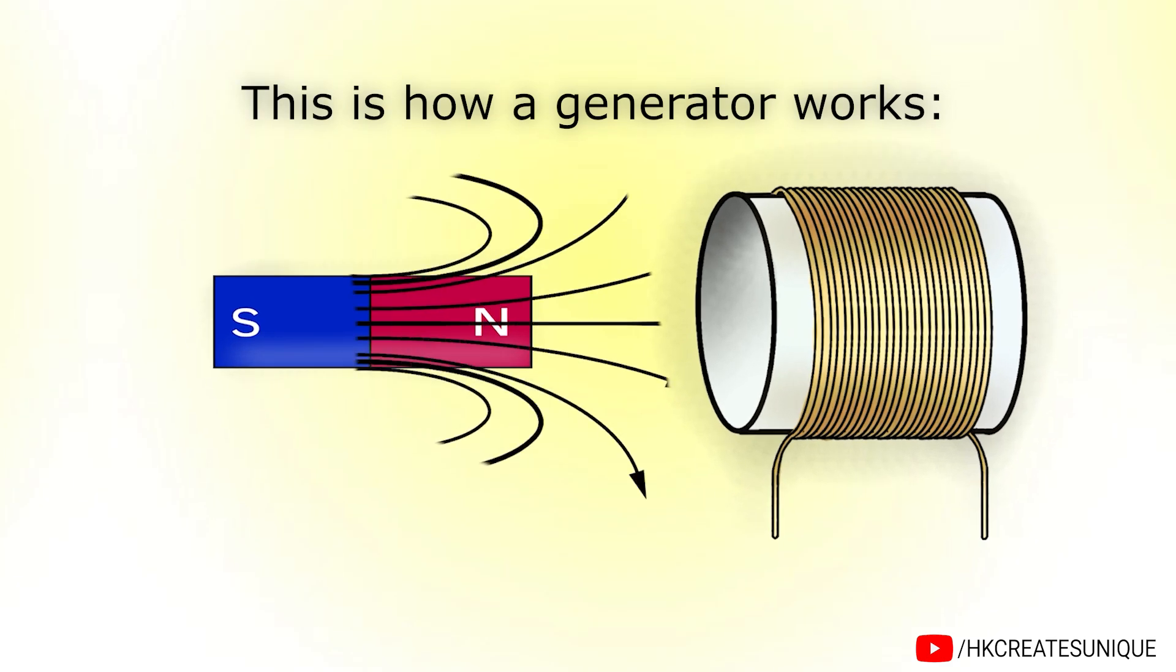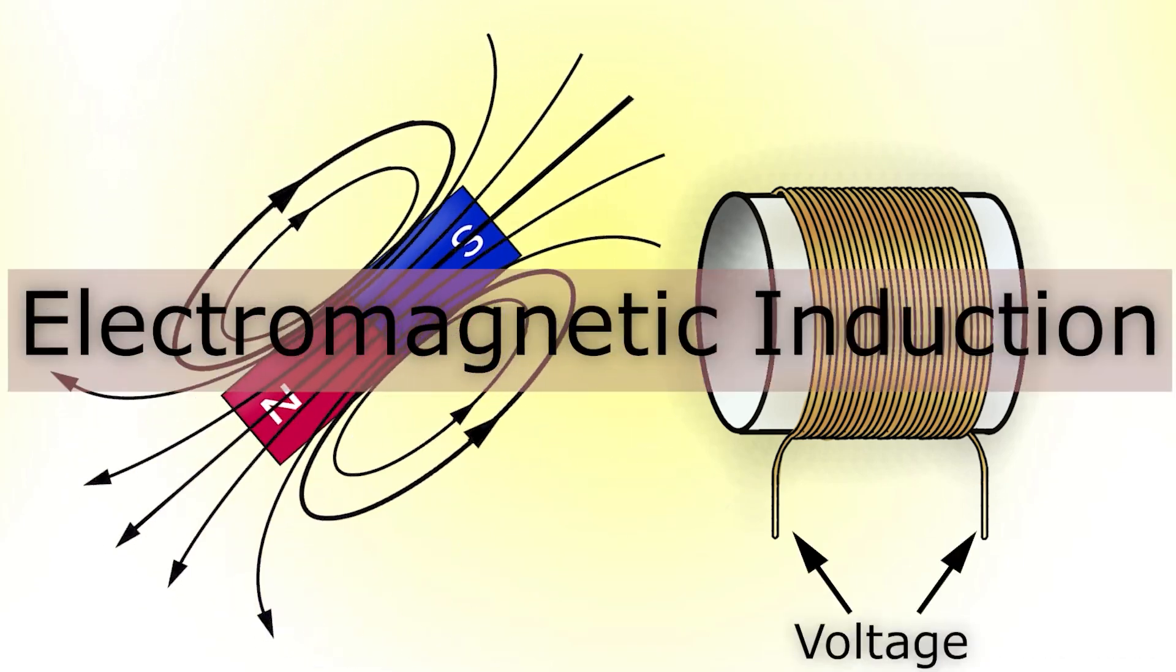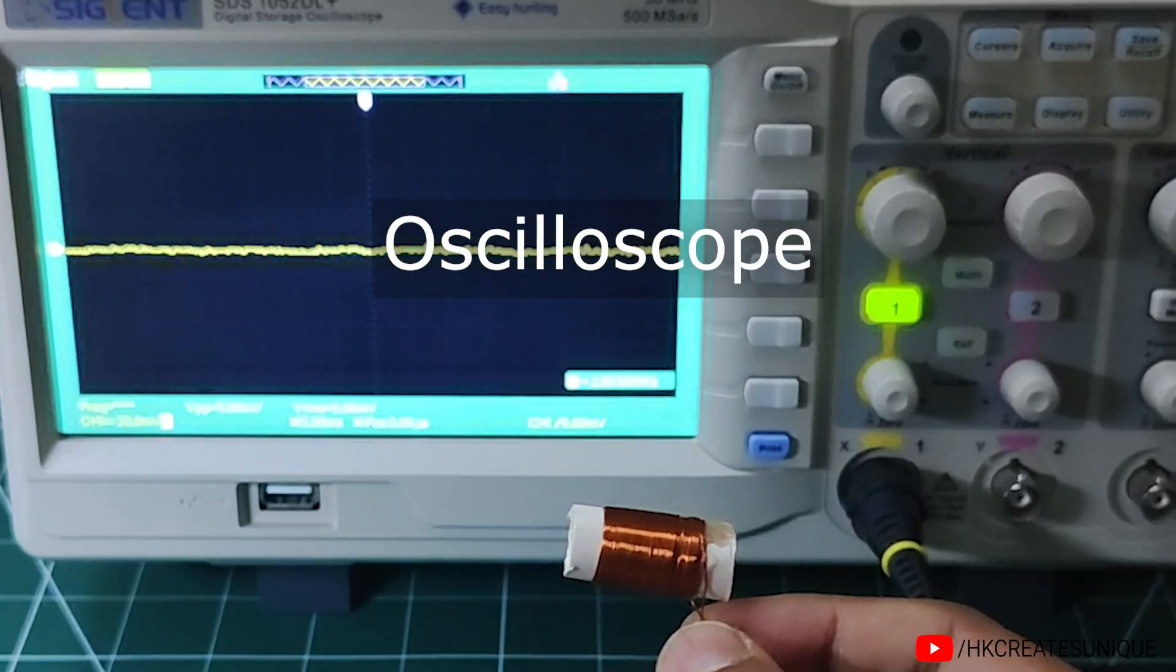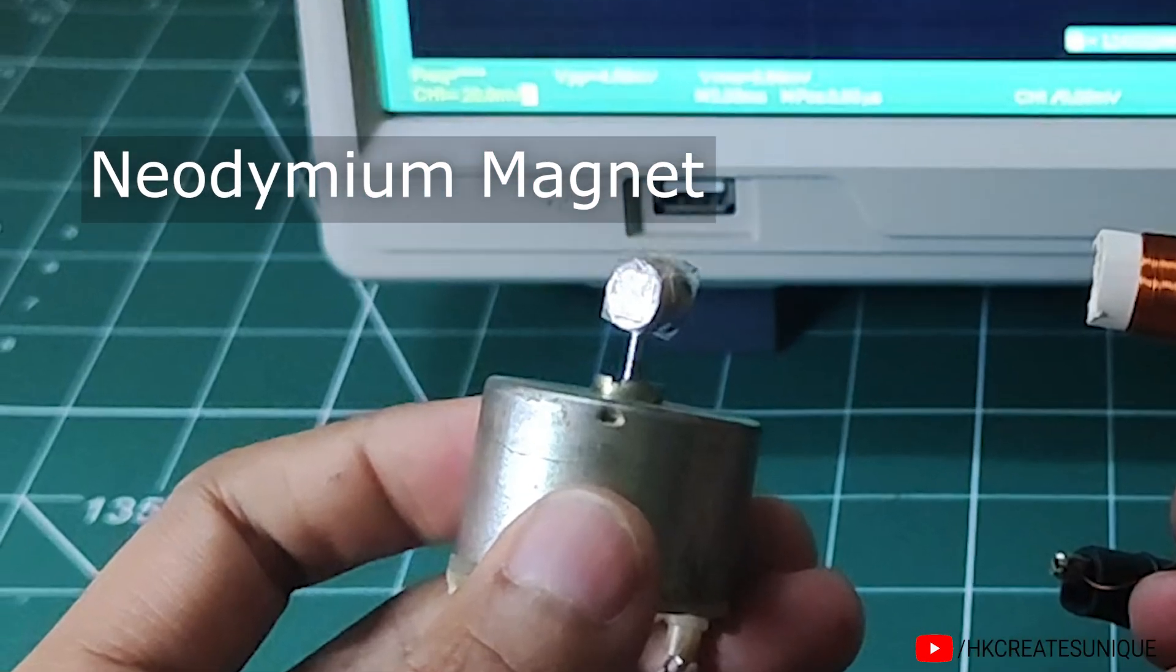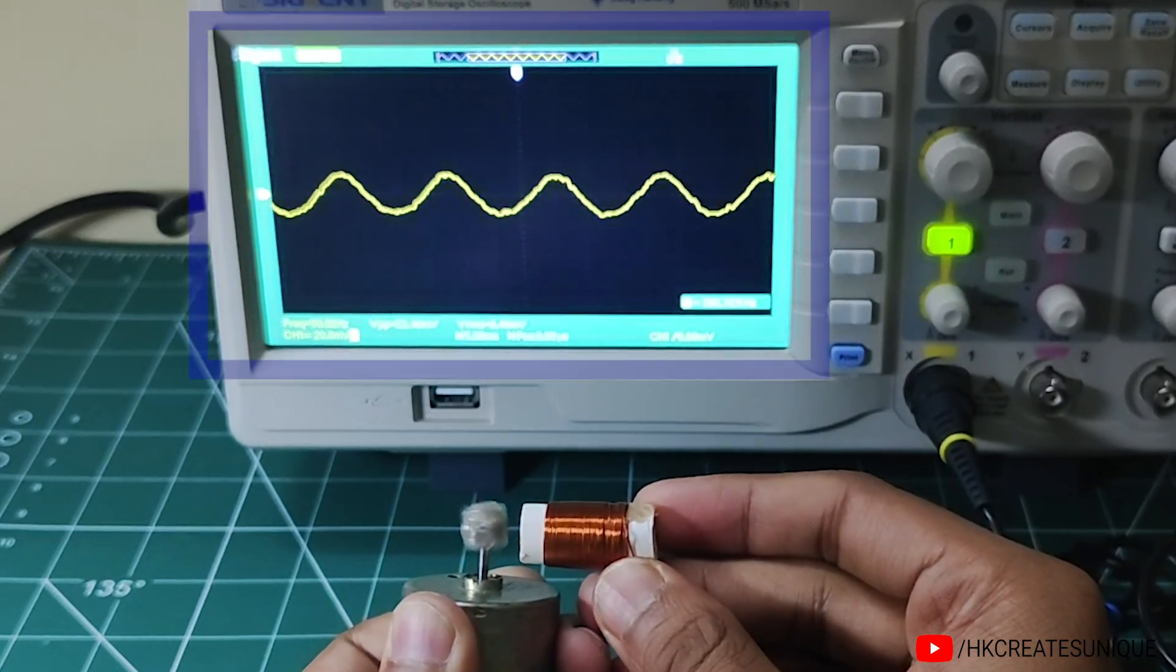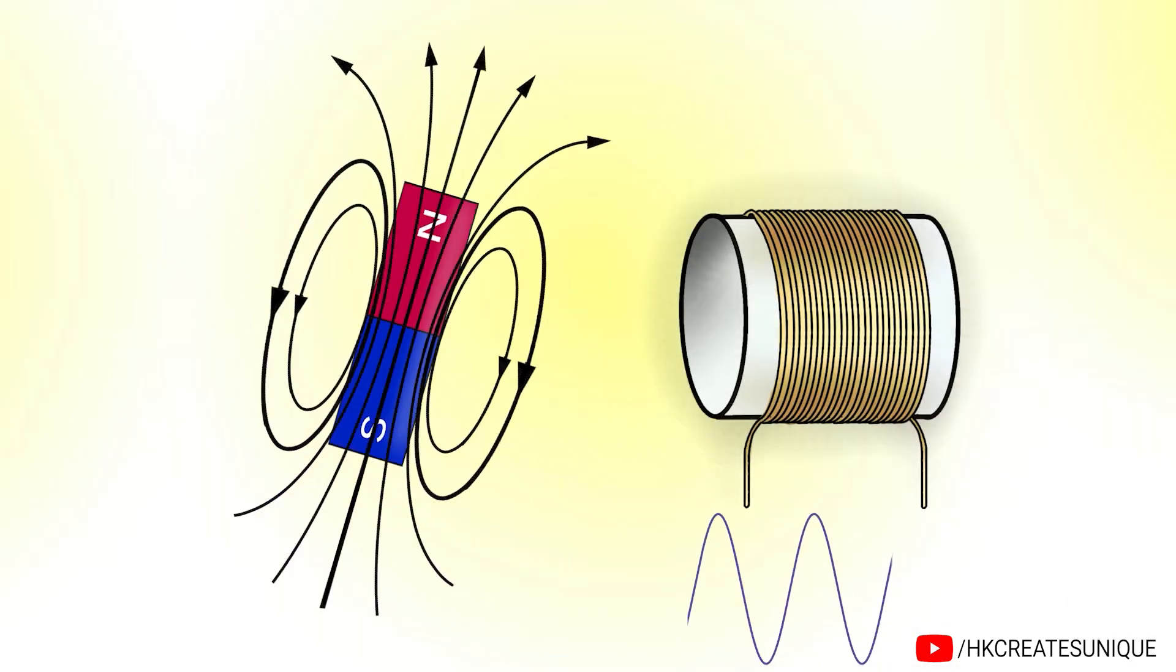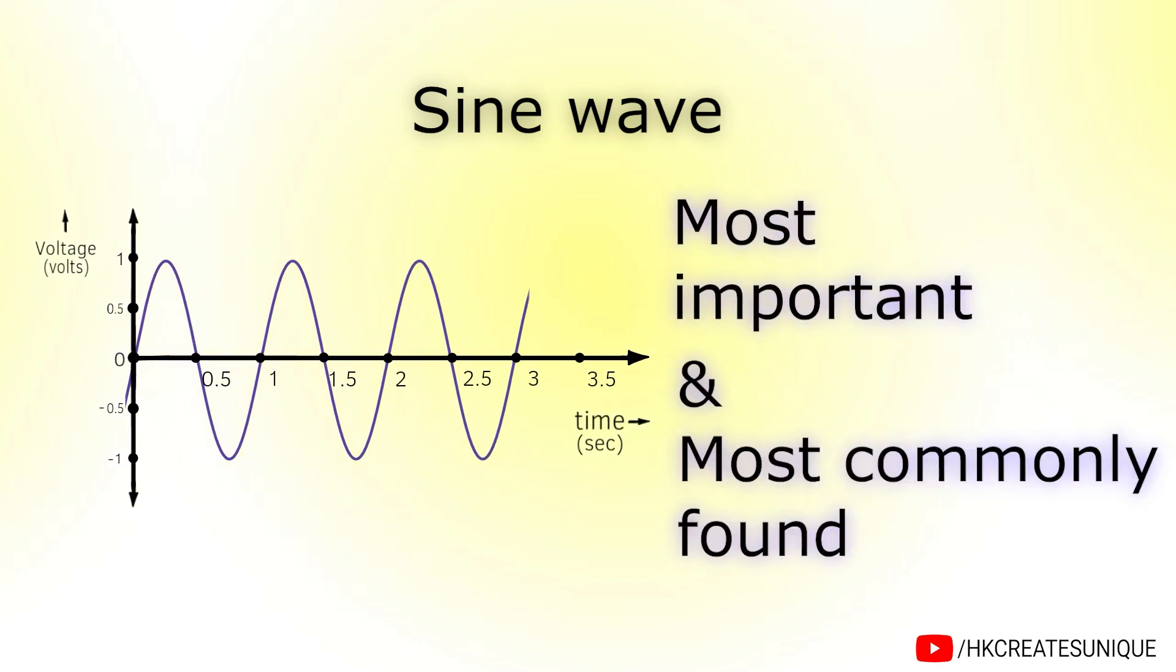This is how a generator works. As the magnetic field is rotated near the coil, it induces voltage across the coil due to electromagnetic induction. Here is a practical demonstration. This is a coil whose output I have connected to the oscilloscope. And this is a neodymium magnet which I have connected to the shaft of a motor to get rotating magnetic field just for demonstration purpose. Now if I bring the coil near the rotating magnet, you can see voltage appearing on the oscilloscope screen. The output waveform looks like this. This is called sine wave and this is the most important and most commonly found alternating current waveform.